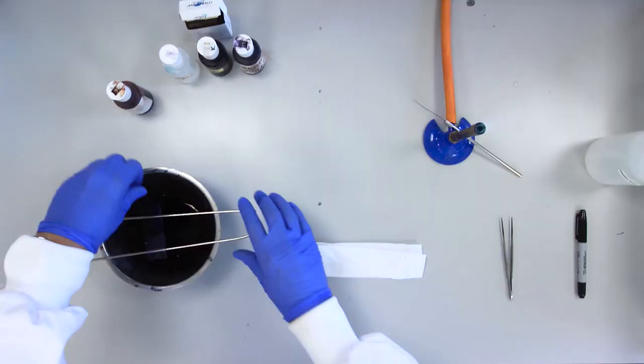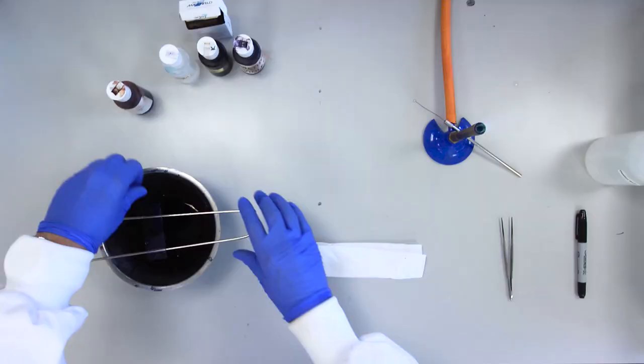Add Neutral Red to the slide and leave to stain for one minute.